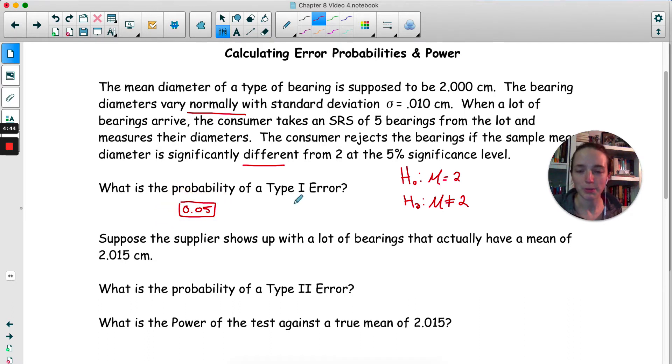So suppose the supplier shows up with a lot of bearings. They actually have a mean of 2.015. Now 2.015, in reality, we wouldn't actually know the true mean, but for this scenario, we're going to just pretend that we actually know.